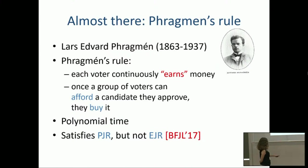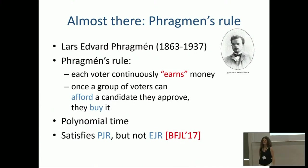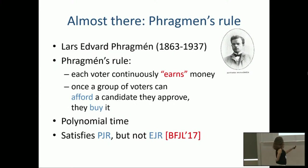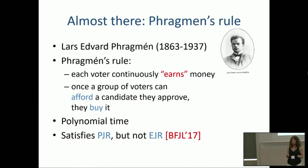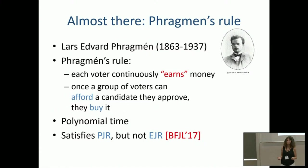The authors of this paper are Markus Brill, Rupert Freeman, Svante Janson, and Martin Lackner. That was kind of concurrent work. At that point it seemed like maybe EJR is too much to ask for, and maybe we should be happy with PJR. But one year later, we had another idea — going back to that local swap argument and looking at it more carefully.